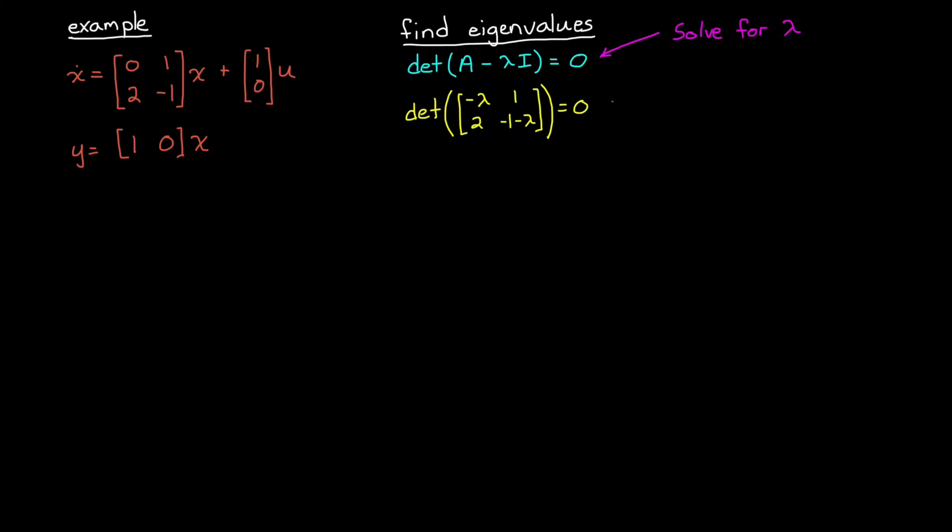Let's try an example with a second order system with a single input. We can find the eigenvalues by setting the determinant of A minus lambda I to 0, and then solve for lambda. And they're at minus 2 and plus 1. One of the modes will blow up to infinity because of the presence of the positive real eigenvalue, and so the system as a whole is unstable.